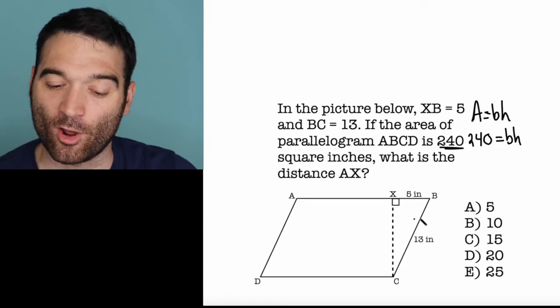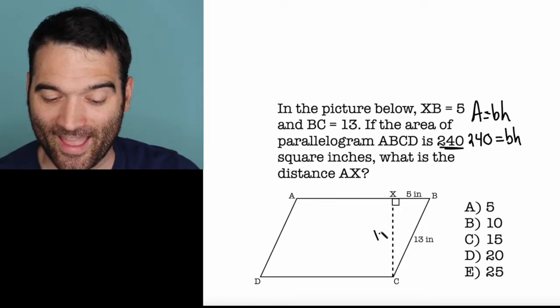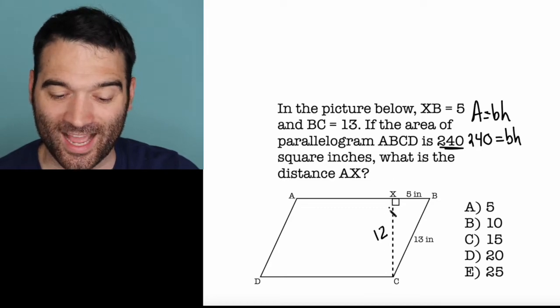In the interest of time, I'm going to let you solve that on your own. A squared plus B squared equals C squared. And that comes out to 12. So the height of this is 12.